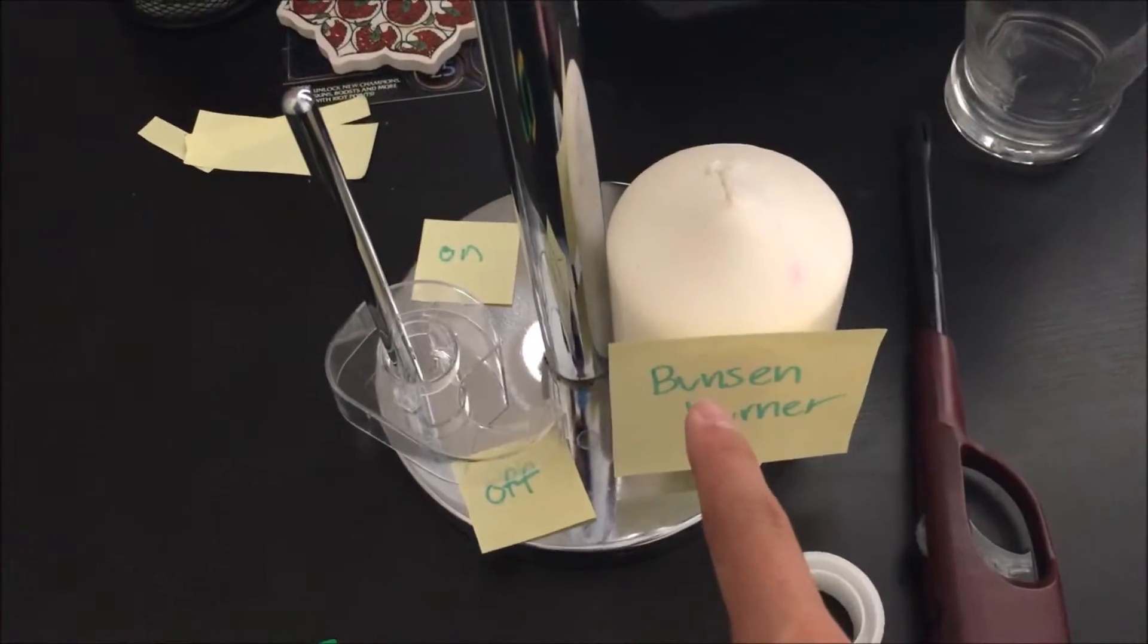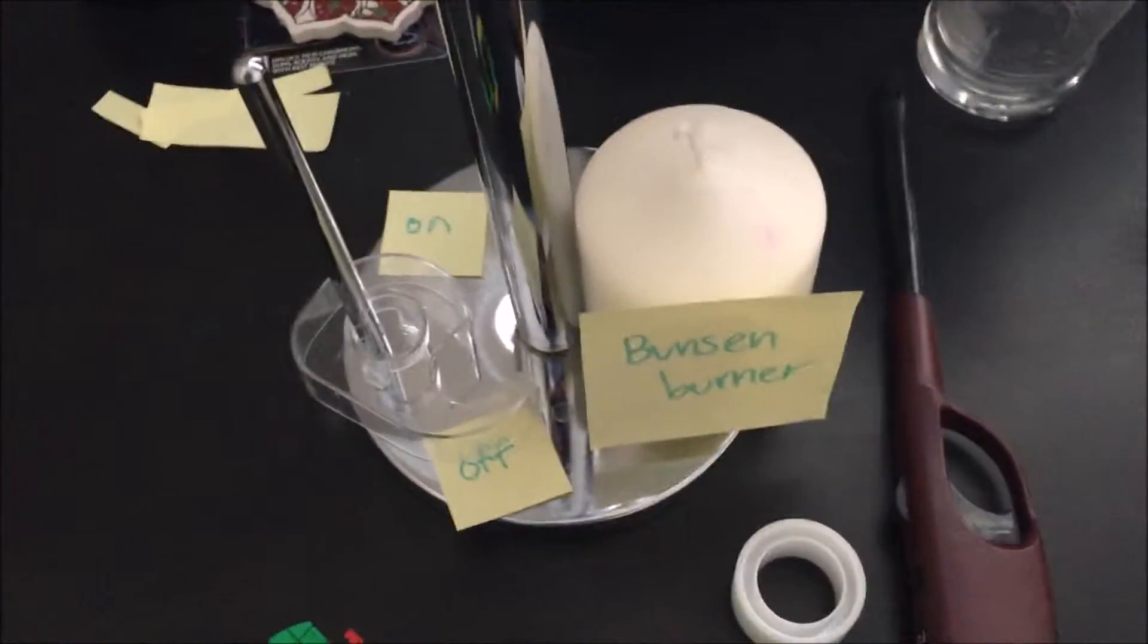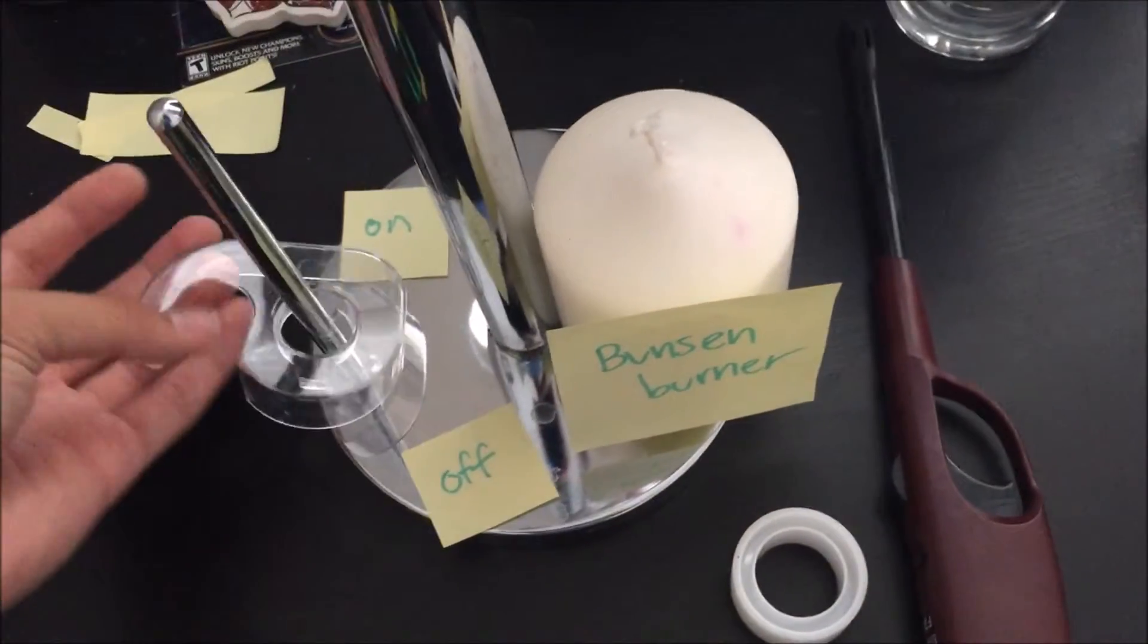This is your Bunsen burner and your gas switch. Make sure that when you're not using the Bunsen burner that the switch is off. When you're ready to light the Bunsen burner, switch it on.